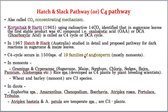The C4 pathway was first identified by Kortschak and Hatch, whereas the detailed description was given by Hatch and Slack. They were Australian plant physiologists, and in 1967, while working on sugarcane and maize leaves, they identified and explained this C4 pathway in detail.